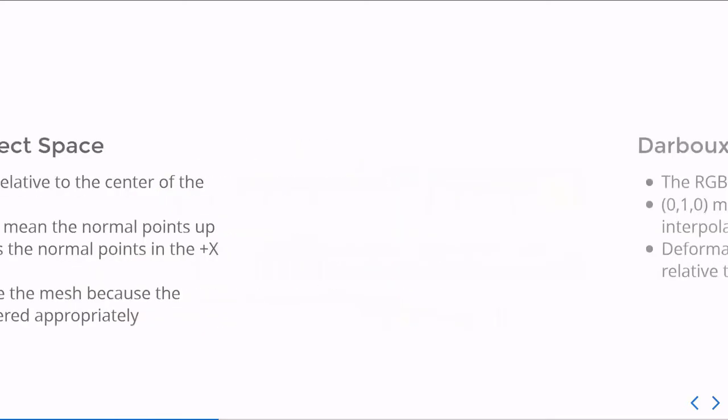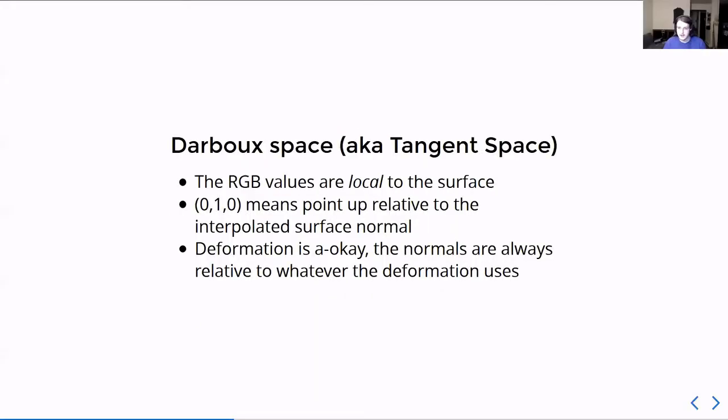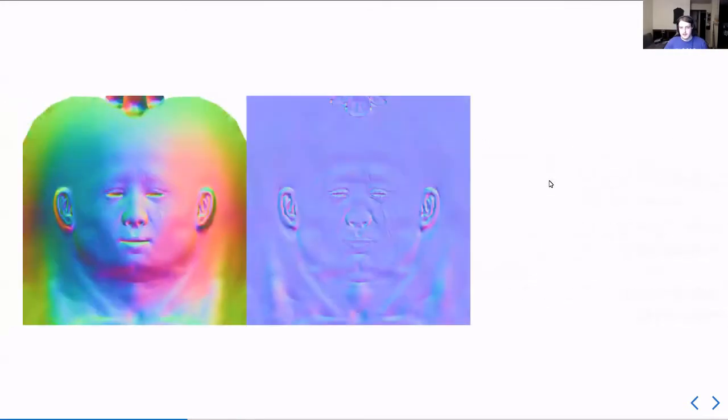The solution for this is using Darbo space, also known as tangent space. And instead of storing the positions in a global frame of reference or local to the object, it stores them local to the triangle or pixels. And that's why the picture here is mostly blue because it's mostly pointing up and then there's a couple of perturbations on the X and the Y or the Z axis. But most of the time it's pointing vertical or actually it's pointing in the Z axis.